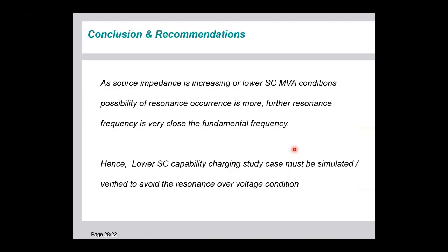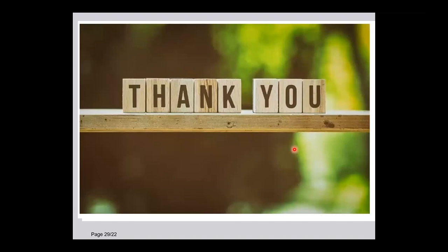These are the conclusions. As source impedance increases — equivalently, lower short-circuit MVA conditions — the possibility of resonance occurrence is more, and the resonance frequency is very close to the fundamental frequency, which may lead to over-voltage occurrence. Equipment may get damaged due to temporary over-voltages of long duration. To avoid this, under very low short-circuit capability charging or continuous conditions, it must be simulated and verified to avoid the ferroresonance condition. Thank you — that's it.